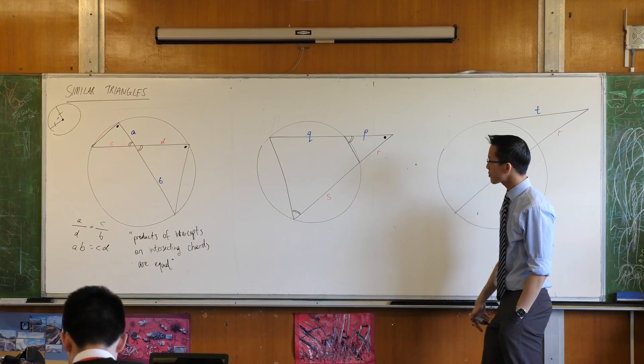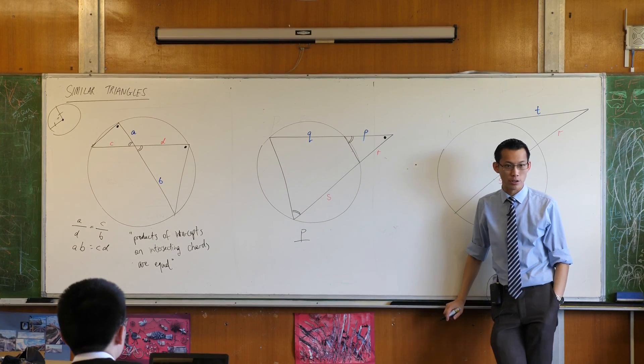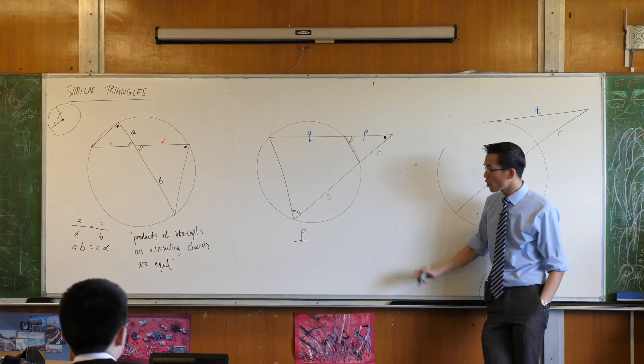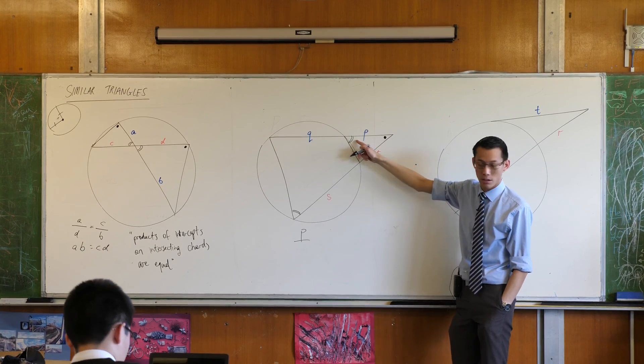So for example, side P, what does that correspond to in the other triangle, in the big triangle? Yeah, so it corresponds to these two together because it's on the bottom, it's the one close to this angle, right?